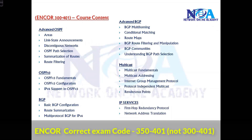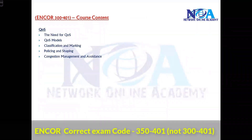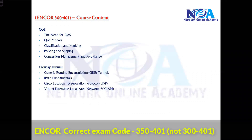IP services include first-hop redundancy protocols like HSRP, VRRP, and GLBP, as well as Network Address Translation (NAT) and Quality of Service (QoS) — covering the need for QoS and its different models: classification, policing, marking, and shaping.